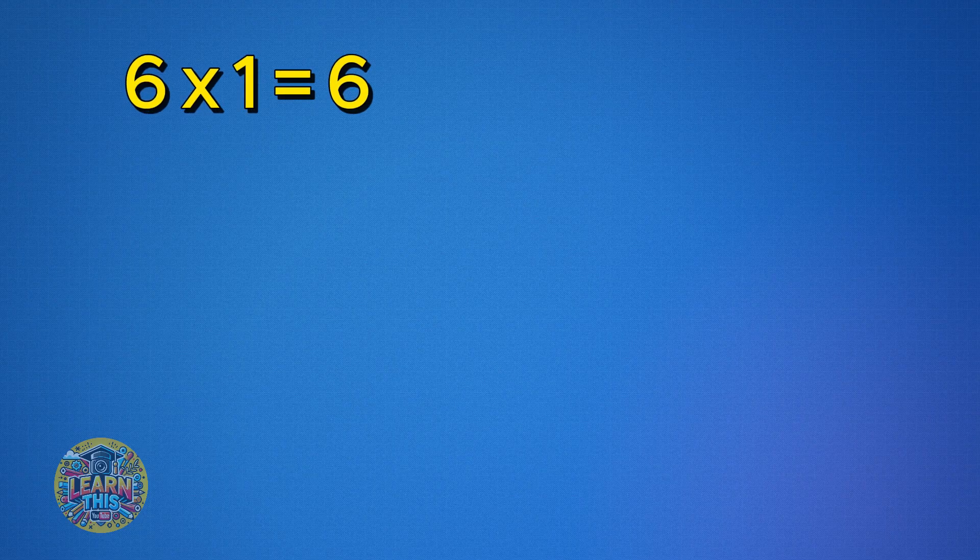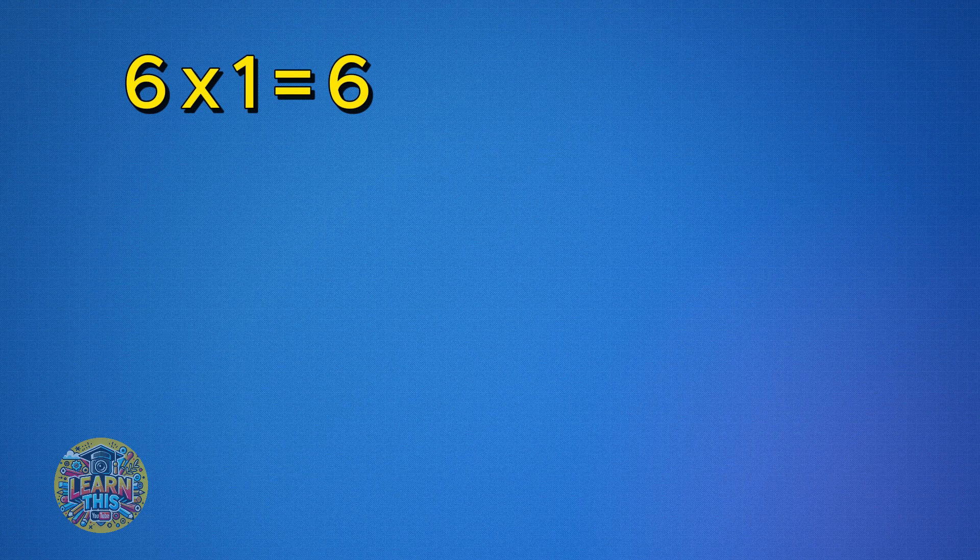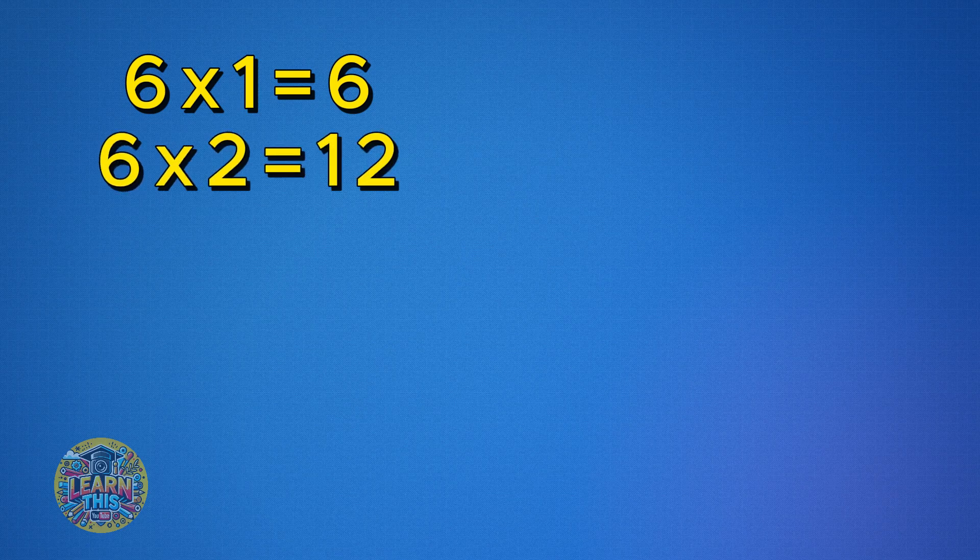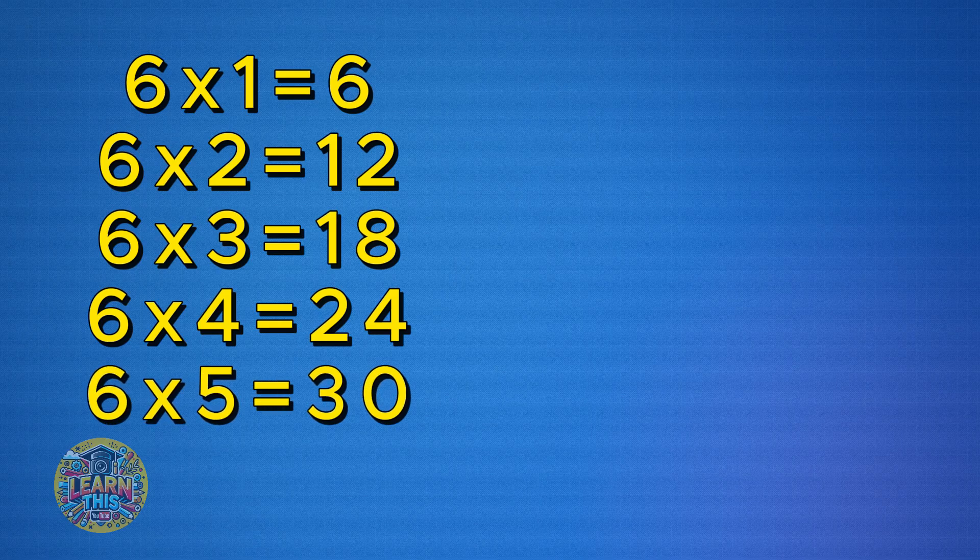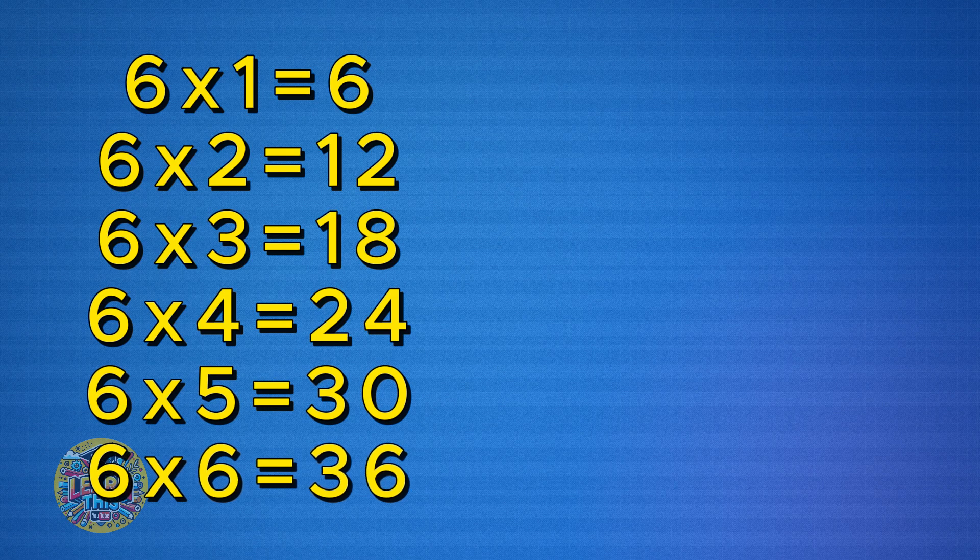Six times one is six. Six times two is twelve. Six times three is eighteen. Six times five is thirty. Six times six is thirty-six.